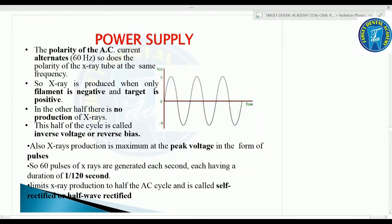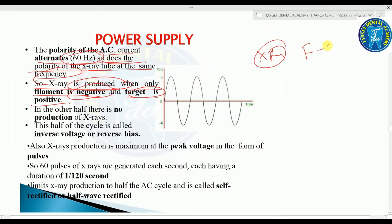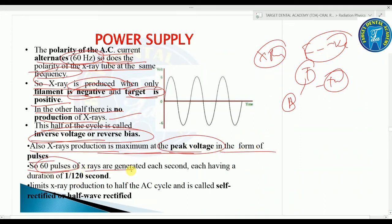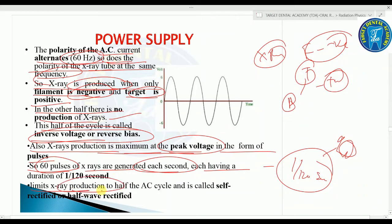The polarity of the AC current alternates at 60 Hz, as does the polarity of the X-ray tube. X-rays are produced only when the filament is negative and the target is positive; in the other half-cycle there is no X-ray production. This other half is called inverse voltage or reverse bias. X-ray production is maximum at peak voltage, generating 60 pulses per second each of duration 1/120 second. This limits production to half the AC cycle and is called self-rectified or half-wave rectified.